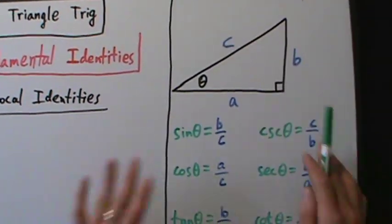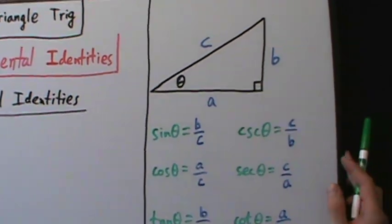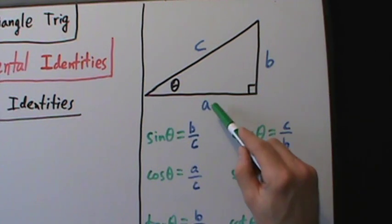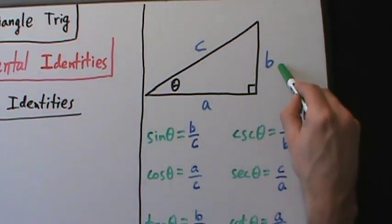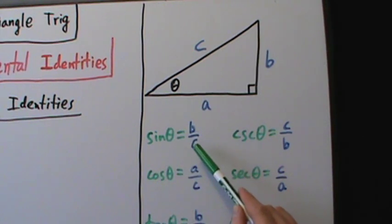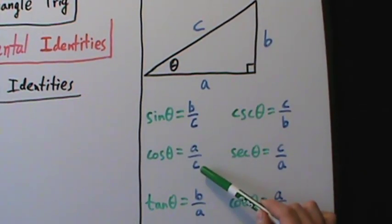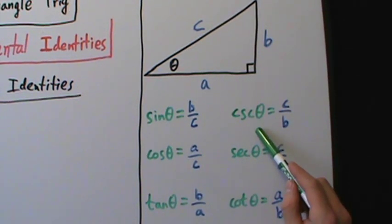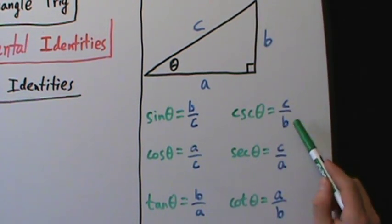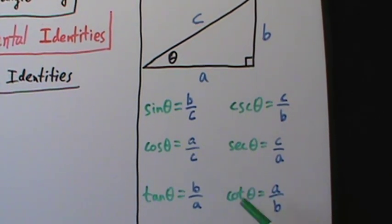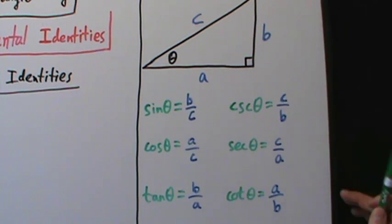Here we have a shortened version of what we did in the last video. We have a right triangle with a right angle, angle theta, side A as the adjacent, side B as the opposite, and side C as the hypotenuse. Sine of theta is opposite over hypotenuse, cosine is adjacent over hypotenuse, tangent is opposite over adjacent, cosecant is hypotenuse over opposite, secant is hypotenuse over adjacent, and cotangent is adjacent over the opposite side.